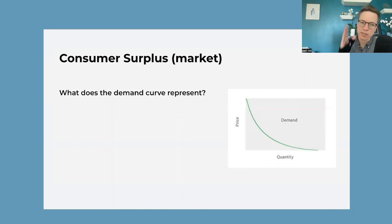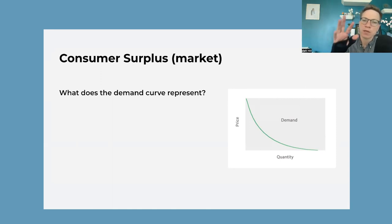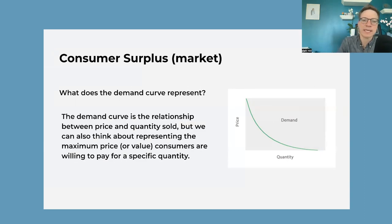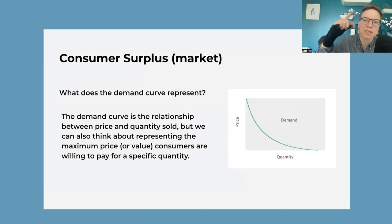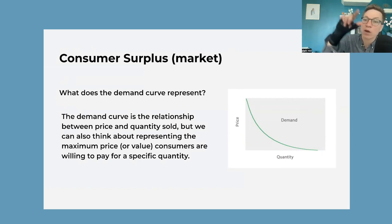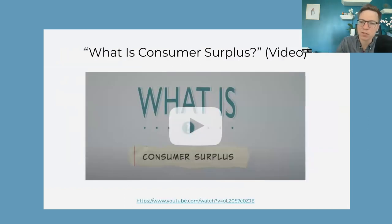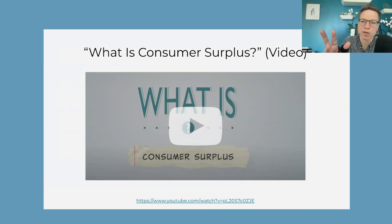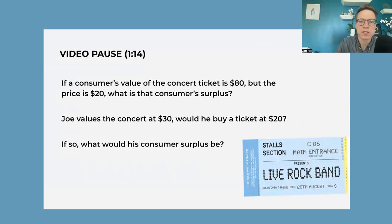At the individual level, that's consumer surplus on each item: what's the most you would have paid minus what you do pay for it. When we go up to the market level, we have to think about the demand curve. The demand curve ultimately represents all the buyers and the relationship between price and quantity sold. Each point on the demand curve represents somebody's willingness to pay. We have a video going through how to think about consumer surplus both at the individual level and at the market level, and it shows how to calculate it if required.